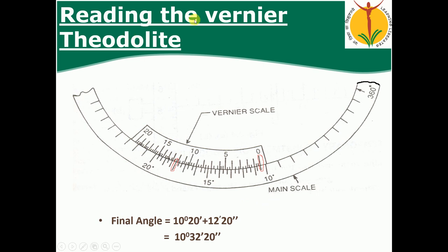Now we are going to see how to read the vernier of the theodolite. First, we set vernier zero with the main scale zero. After moving the plate, the main scale moves. One degree is divided into three parts, so the least count on the main scale is 20 minutes — one line indicates 20 minutes. If the vernier zero passes a line, the main scale reading would be, for example, 10 degrees 20 minutes. For readings that don't coincide exactly, we read the vernier scale.